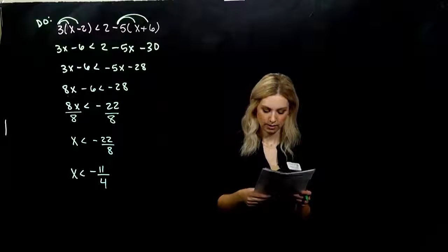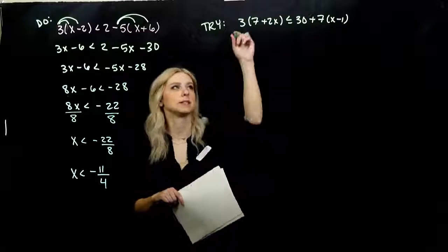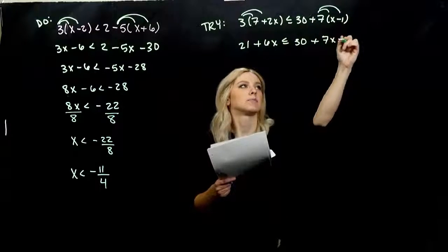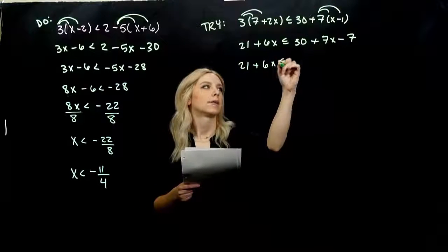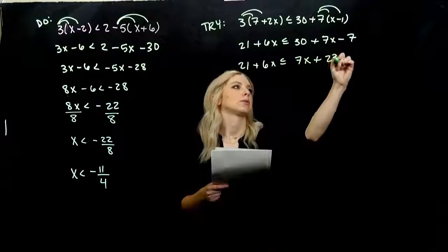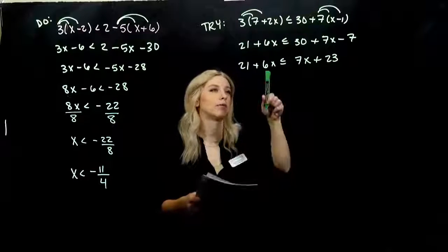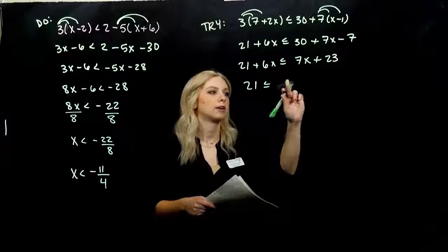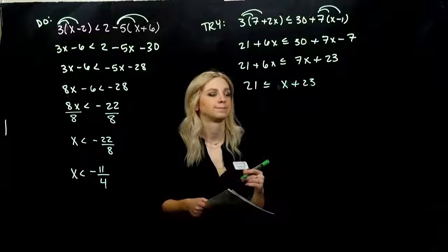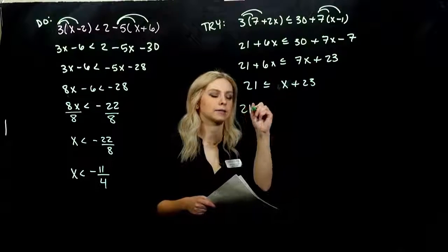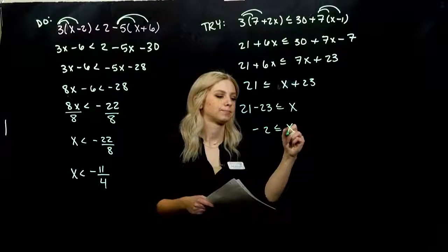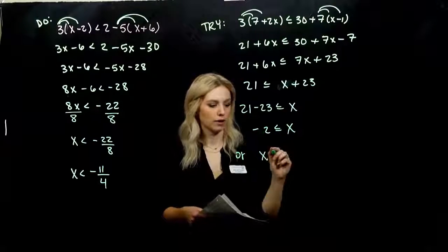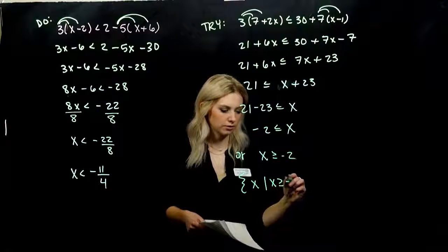So go ahead and take a try — solve the inequality, and see what you get. You have to get rid of the parentheses. So 3 times 7 gives us 21 plus 6x, less than or equal to 30 plus 7x minus 7. We can combine like terms on the right: 7x plus 23. To keep my coefficient positive, I want to move 6x — subtracting from both sides leaves me with one factor of x plus 23. I subtract 23 from both sides, getting minus 2 less than or equal to x, or equivalently, x greater than or equal to minus 2, written in set builder notation.